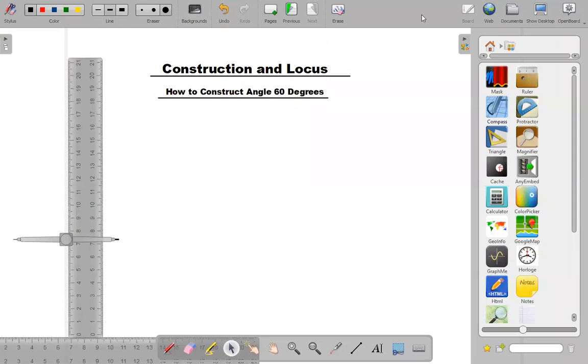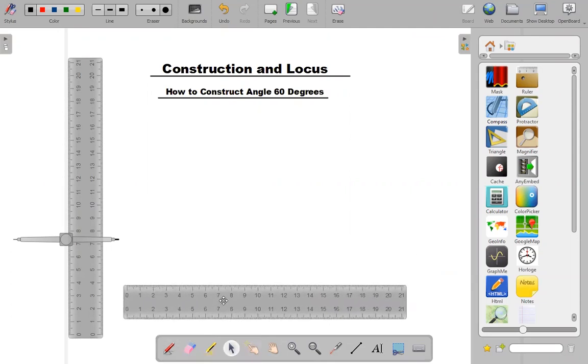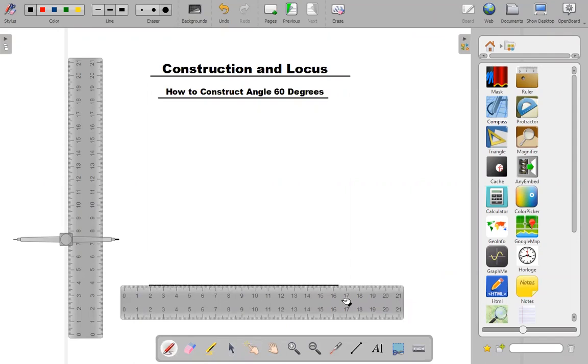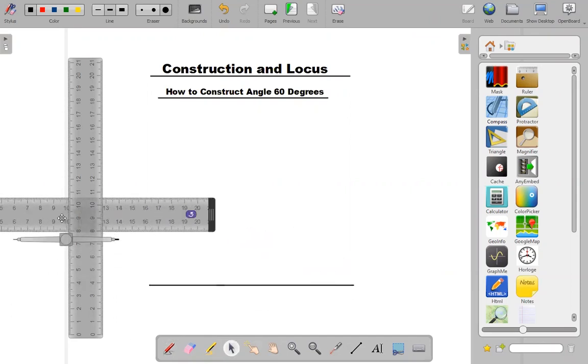In this lesson we learn how to construct an angle of 60 degrees. To construct an angle of 60 degrees, we have a straight line. I'm going to draw a straight line here, and this straight line I'm going to label it line AB.